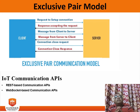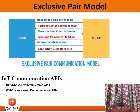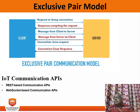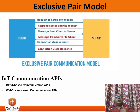The uniform interface constraint requires that the method of communication between client and server must be uniform. Resources are identified in the request and are themselves separate from the representation of the resource data returned to the client. When a client holds a representation of a resource, it has all the information required to update or delete the resource, provided the client has the required permission. Each message includes enough information to describe how to process it.